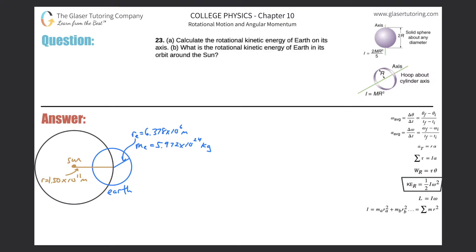Number 23, letter a: calculate the rotational kinetic energy of Earth on its axis. I have a picture here — the second part of the problem also involves the Sun, so I have the Earth rotating around the Sun. This is not to scale. For the first part, we need to find the rotational kinetic energy of Earth rotating about its own axis. The formula is highlighted on the right-hand side — we use the rotational kinetic energy formula.